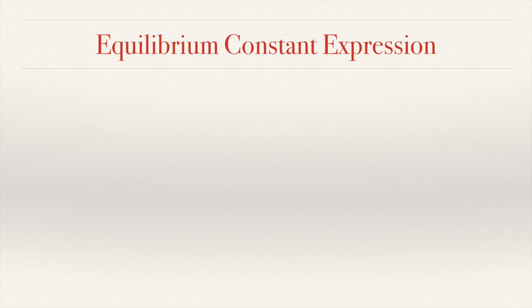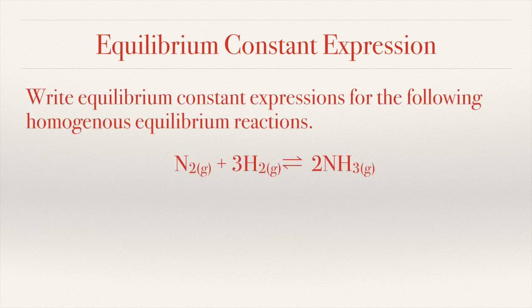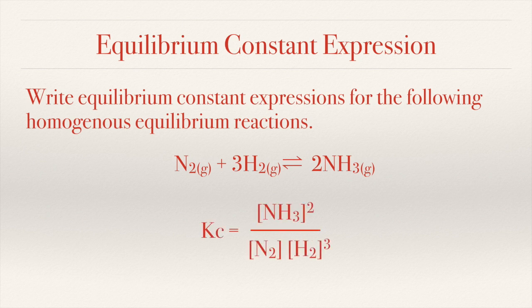Let's look at another example. Here we will look at the reaction between nitrogen and hydrogen forming ammonia. This reaction has an industrial basis — it is called the Haber process. The equilibrium constant expression for this is [NH₃] raised to 2, divided by [N₂] raised to 1 times [H₂] raised to 3.